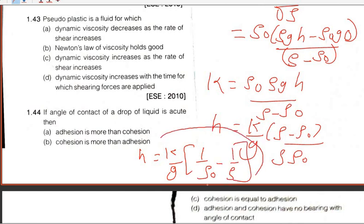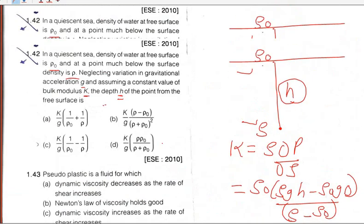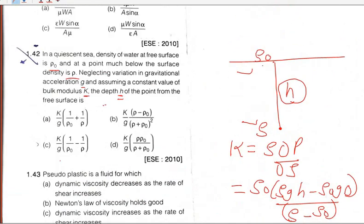This simplifies to h = (K / g) × (1/rho0 minus 1/rho). So the final answer is h = K/g × (1/rho0 − 1/rho).